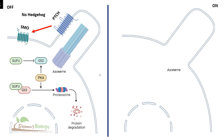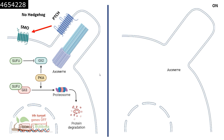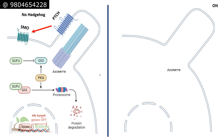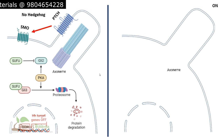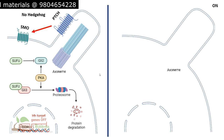Inside the nucleus there is GLI3R (GLI3 repressor). The GLI3 repressor can associate with DNA, but without the GLI3 protein it cannot function. So the transcription of Hedgehog target genes will be turned off.